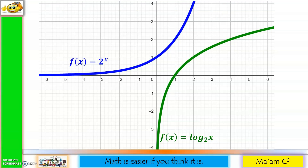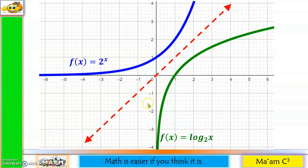To make sure, let us bring out our line y = x. If we fold our Cartesian plane on this line, will these two graphs coincide? Yes, they will. Therefore, exponential and logarithmic functions are indeed inverses of one another.